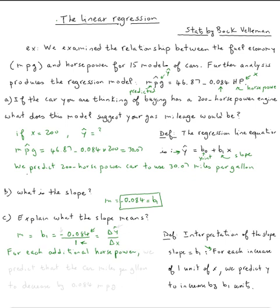For each increase. Now the key here, because we're using ŷ, not y, we have to use the term predict. So we predict, or we expect, we predict the y value to decrease, because it's a negative, so we say decrease. If it was positive, we say increase by 0.084.